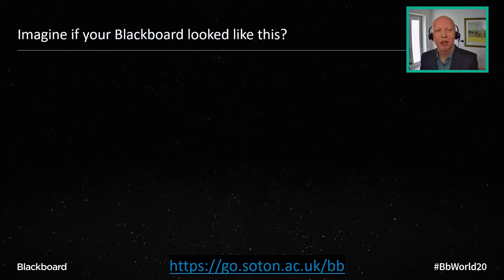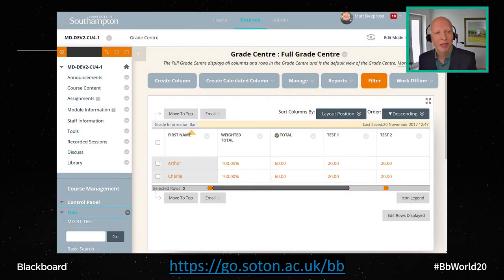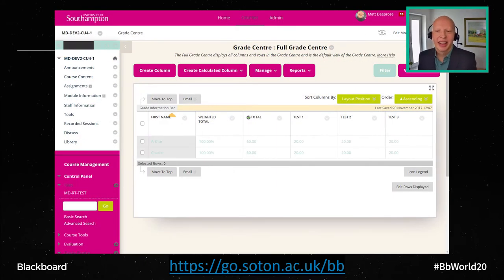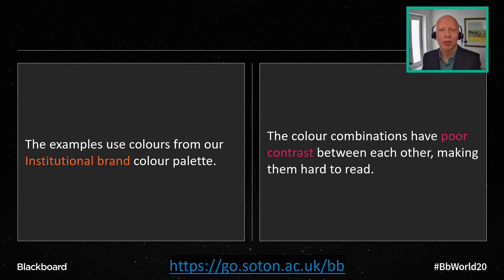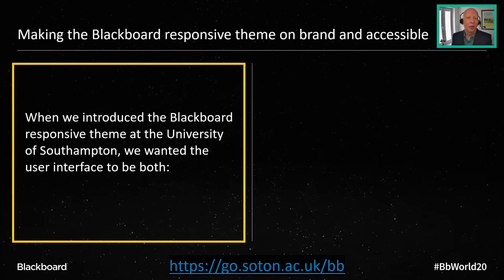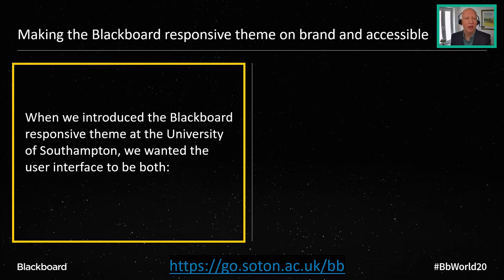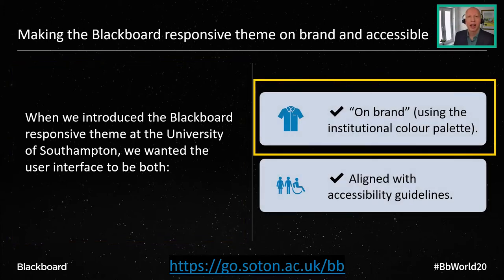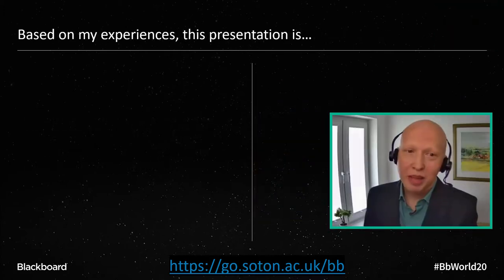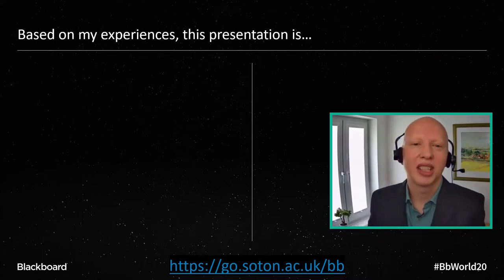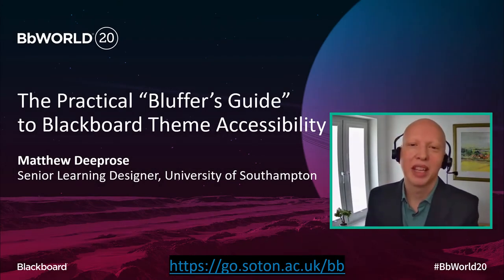Did you know that more than 300 million people worldwide have colour blindness, and many more report difficulties with their sight, and as we grow older our ability to see colour decreases. So with that in mind, imagine if your Blackboard looked like this or like this. Those colours were from our institutional colour palette, but just because we're on brand doesn't mean we should be using those colour combinations, because hopefully you could tell they had quite poor contrast. When we introduced the responsive theme at the University of Southampton, we wanted to make sure it was both on brand and aligned with accessibility guidelines. Based on my experiences of doing that, this is the Practical Bluffers Guide to Blackboard Theme Accessibility.